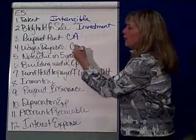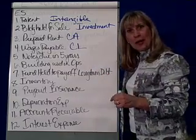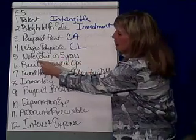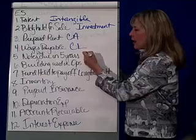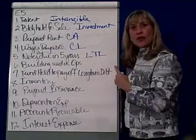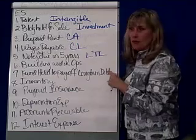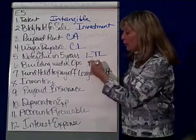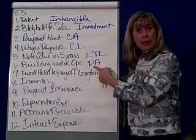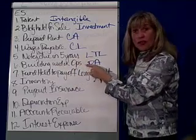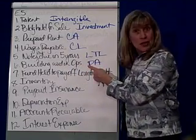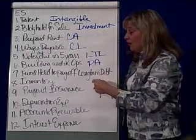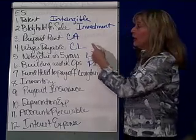Wages payable is a current liability account because your employees don't wait very long to get paid. A note payable due in five years is a long-term liability because you don't have to fulfill that promise for another five years. Building used in operations is a plant asset — property, plant, and equipment — because this building is currently being used to generate revenues and incur expenses, whereas a building held for sale is an investment.